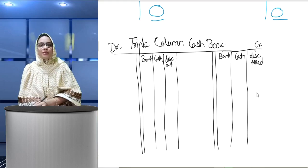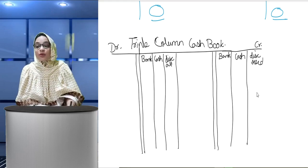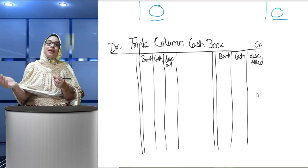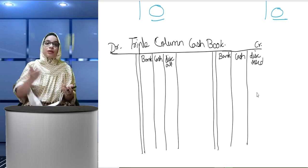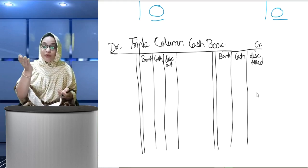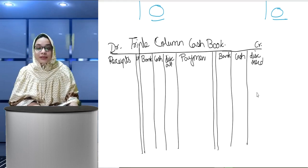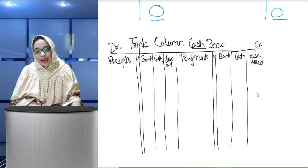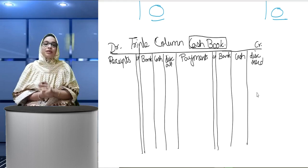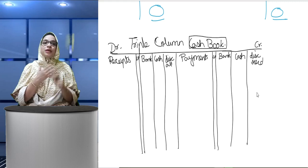Whenever we do an entry in the cash book, whatever amount comes in — either by cash or by bank — we debit it, because our bank account is our asset. Whenever money is coming into the business, our asset increases, that is why debit. So the debit side shows receipts and the credit side shows payments. Since we are doing the chapter of BRS, when I say 'cash book', what you need to understand is that cash book is nothing but my bank account in my books — the bank account in the business's books.